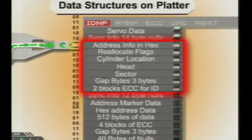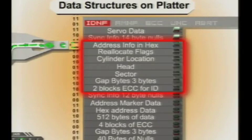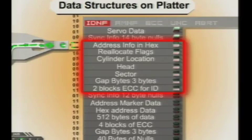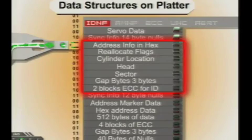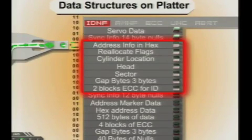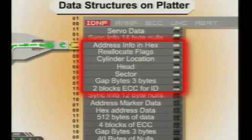You'll see that the servo data is there, which is the geographic information. Then you'll see 14 bytes of null. And the 14 bytes of null are there because as the drive encodes data and puts it onto the platter, if it doesn't have a break, it can't tell where something begins and something ends. It would just always be high.